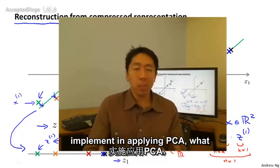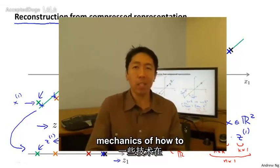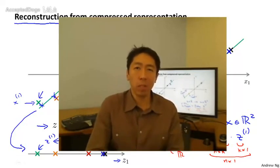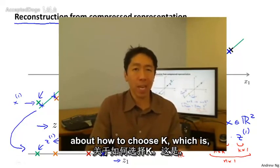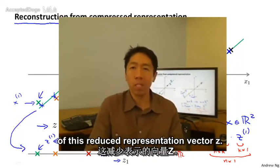Now that you know how to implement and apply PCA, what I'd like to do next is talk about some of the mechanics of how to actually use PCA well. In particular, in the next video, I'd like to talk about how to choose k, which is how to choose the dimension of this reduced representation vector z.